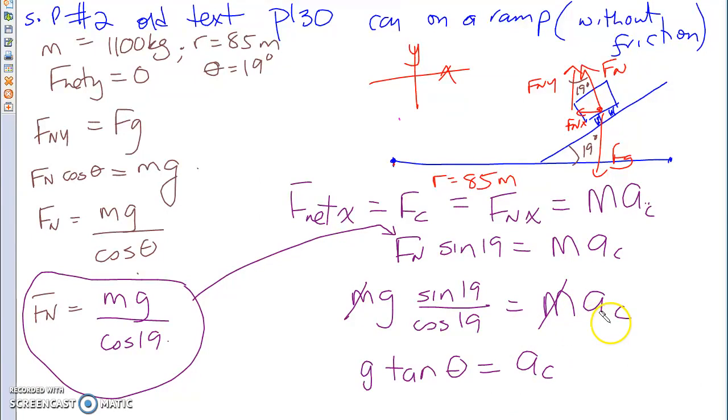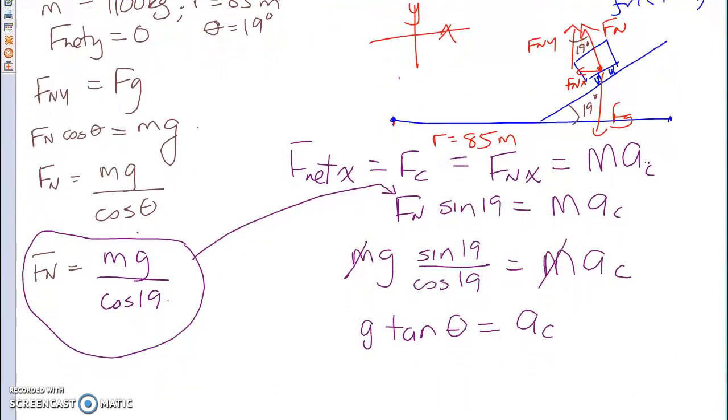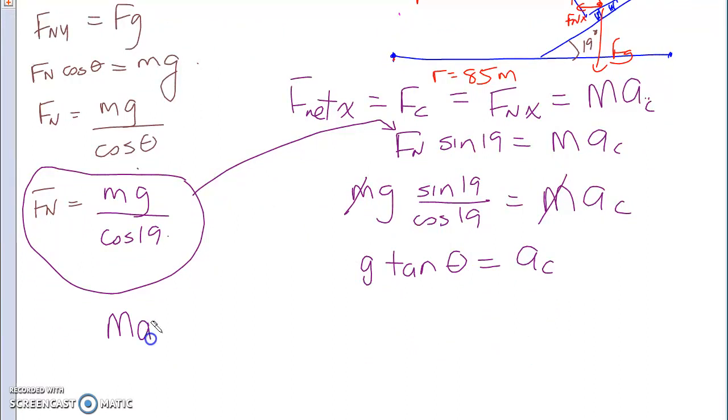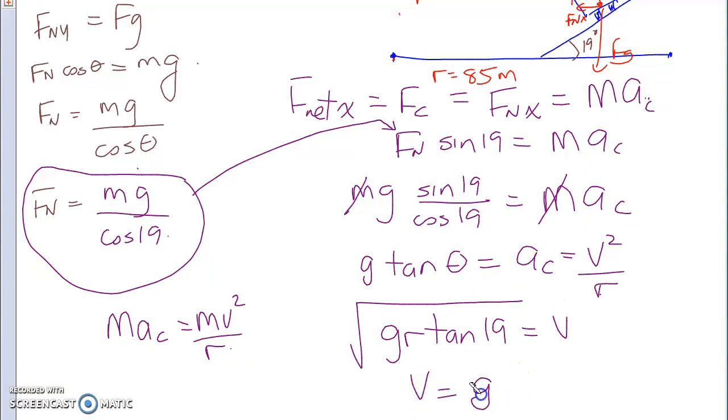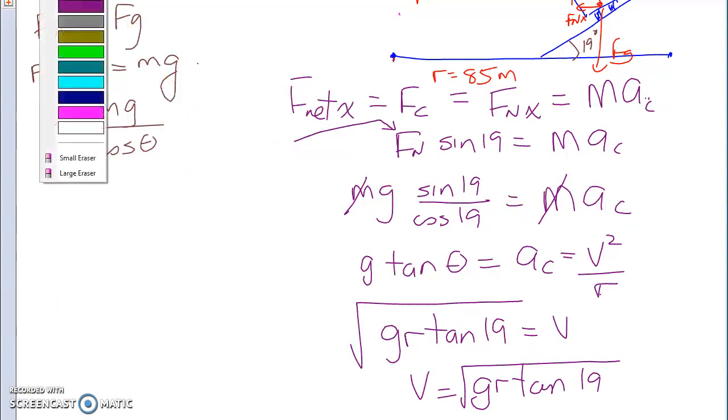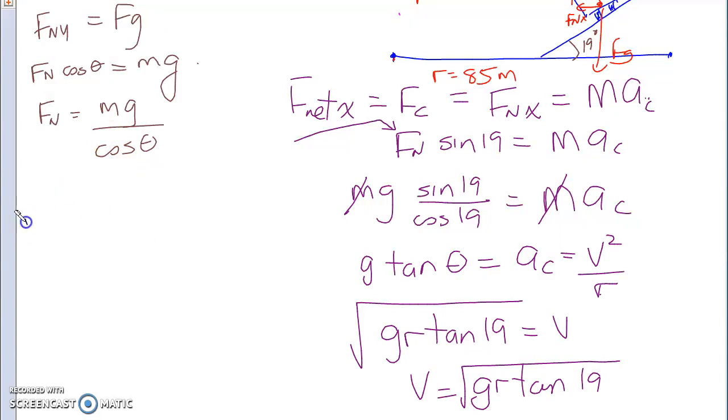Now, of course, our formulas for Mac could also be written down as the following. We know that Mac is the same as MV² over R. So, that's what I'm going to do right here. Instead of Ac, I'm going to put V² over R. Bring the R up so you get gR tan theta which equals to V² and square root. So, V equals to √(gR tan 19). We are going to continue, finish it off. So, the velocity that you need, minimum velocity, is 9.8 times 85 times tan of 19. And I believe the velocity comes out to about 16.9 meters per second.